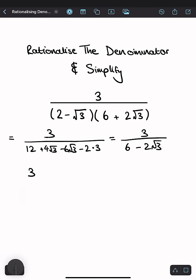So 3 divided by 6 minus 2√3 times 6 plus 2√3 over 6 plus 2√3, because this is just 1 so you're not changing the number.